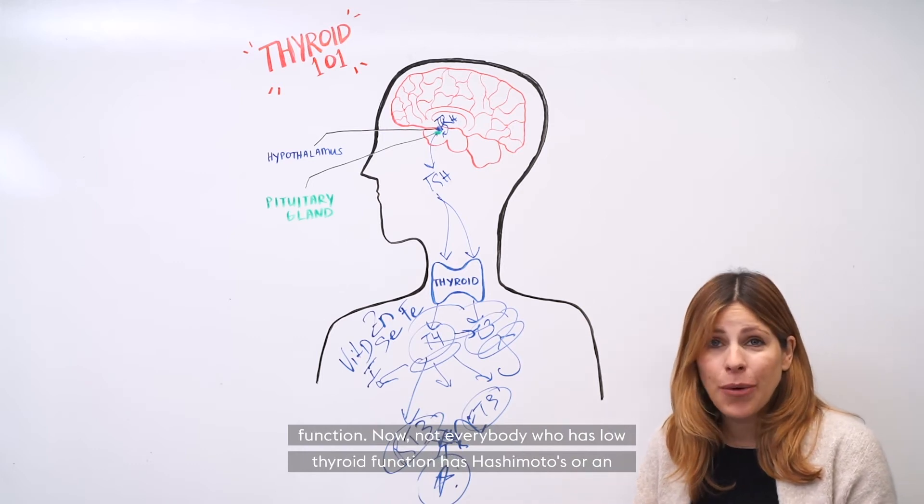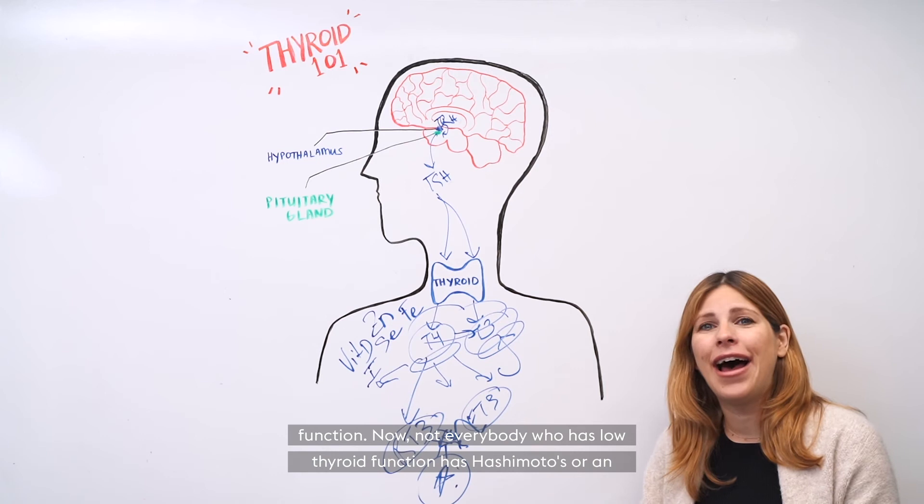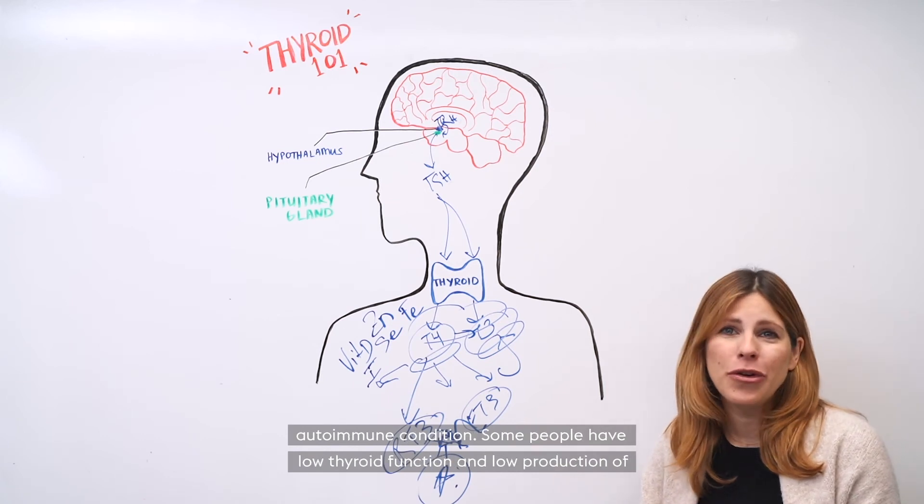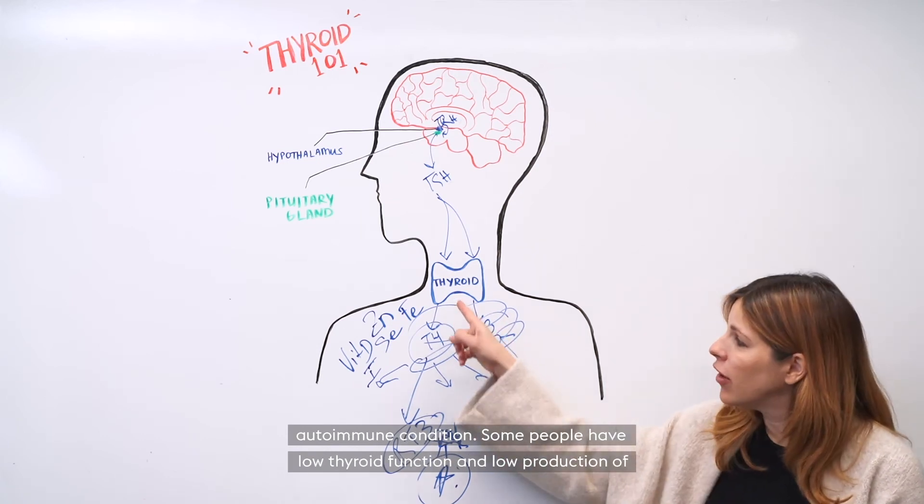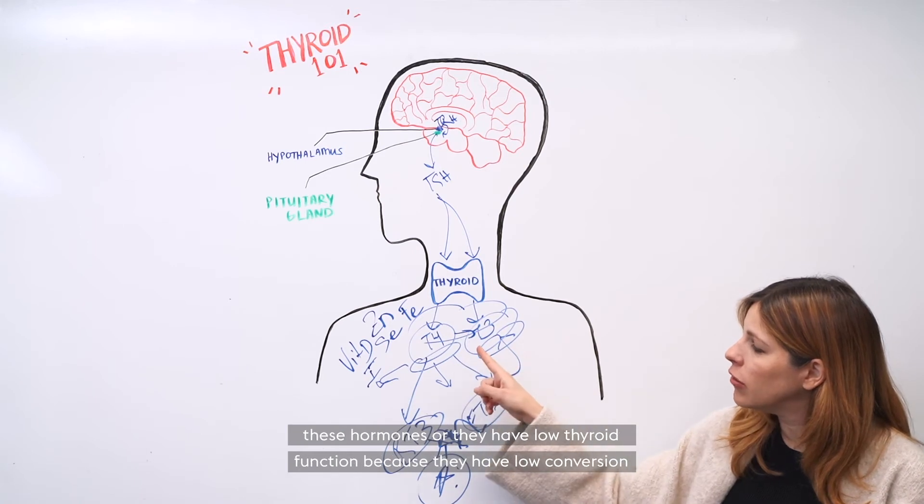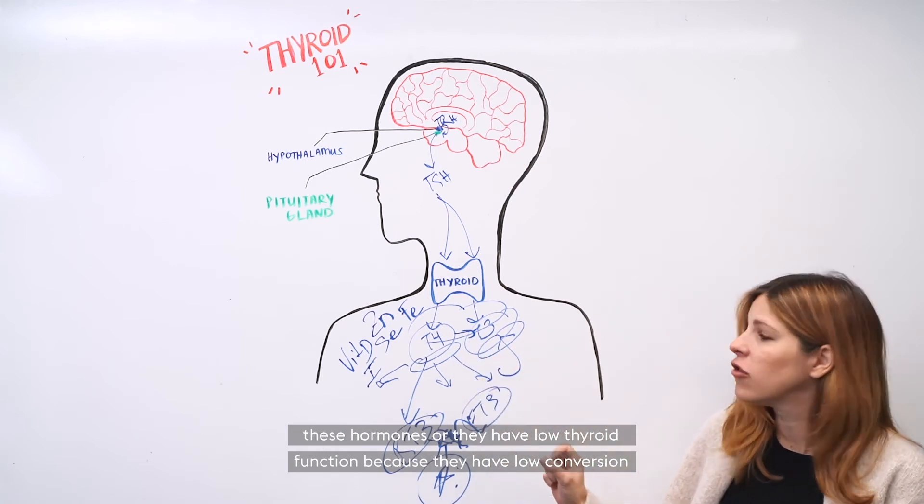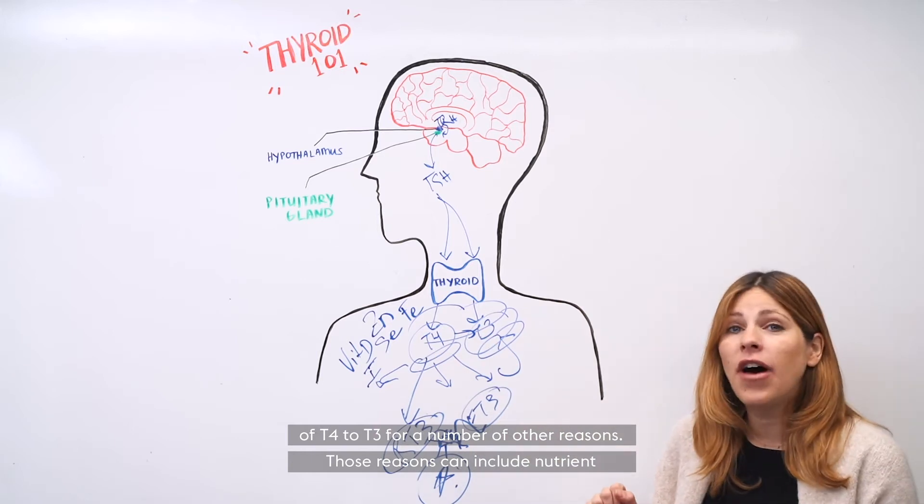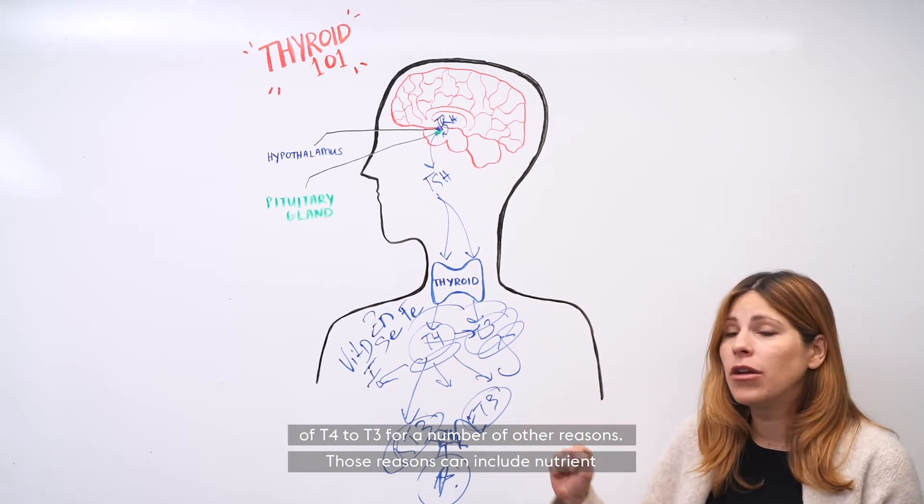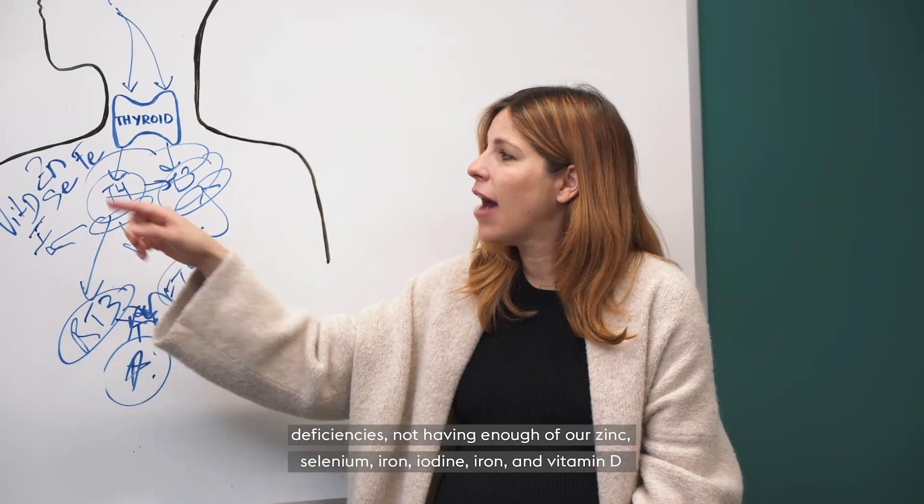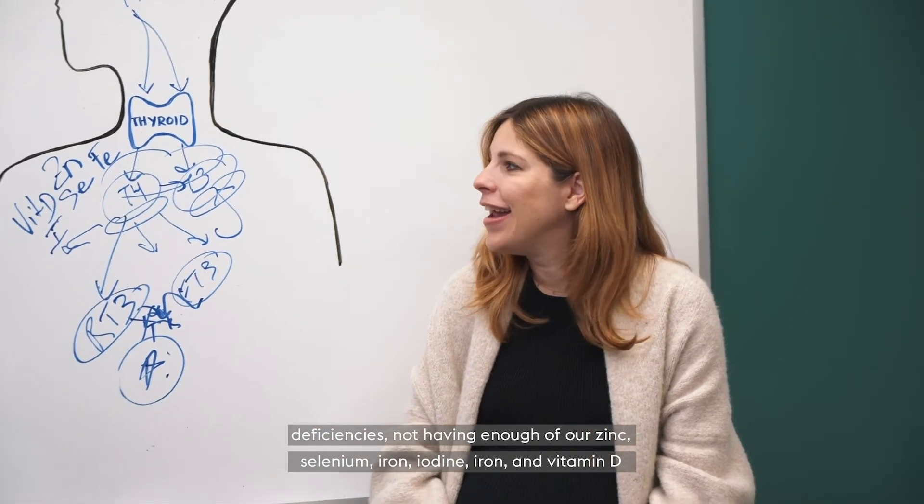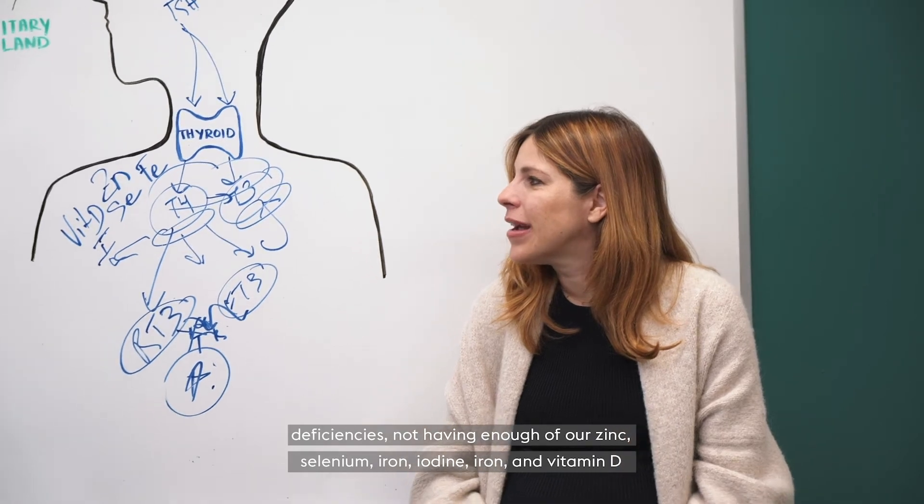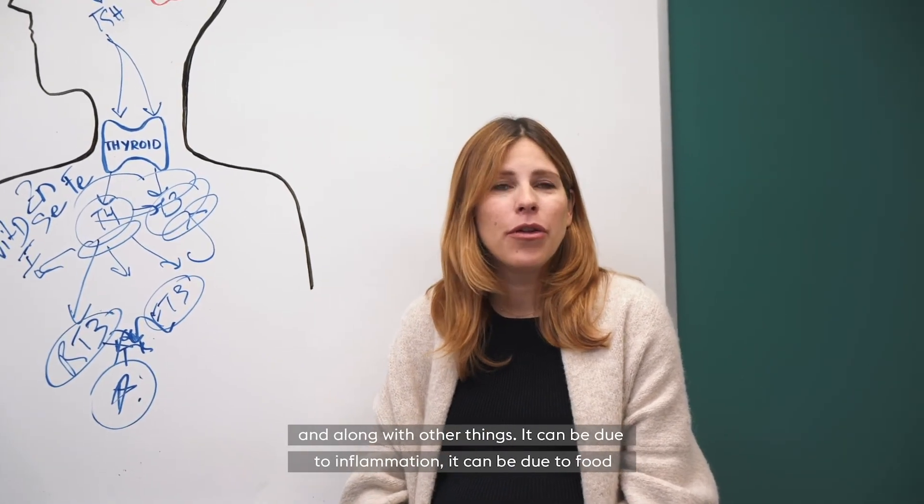Now not everybody who has low thyroid function has Hashimoto's or an autoimmune condition. Some people have low thyroid function and low production of these hormones, or they have low conversion of T4 to T3 for a number of other reasons. Those reasons can include nutrient deficiencies, not having enough zinc, selenium, iron, iodine, and vitamin D.